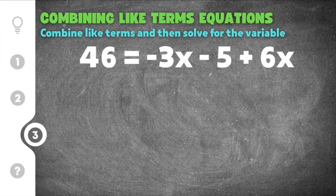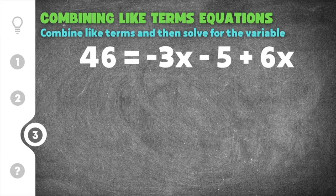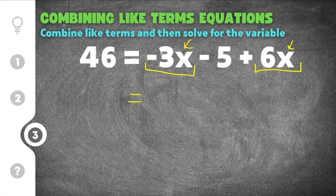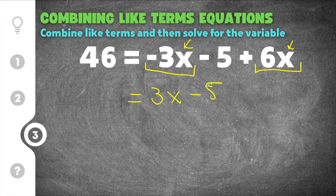Finally, the last practice problem gives us 46 equals negative 3x minus 5 plus 6x. Again, the first thing we do is combine like terms. Negative 3x and 6x both have x, so they are like terms. Negative 3 plus 6 equals positive 3, giving us 3x. The minus 5 comes straight down, and 46 comes straight down on the other side. Now we have 46 equals 3x minus 5.